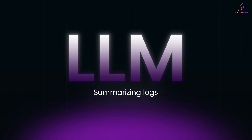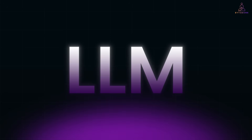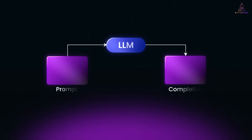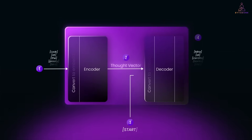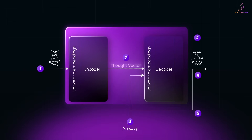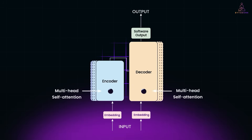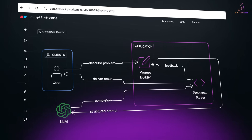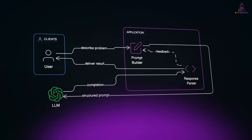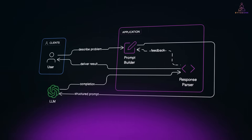Engineers who get good at this can move faster, build smarter, and use AI like a true extension of their toolkit. So in this video, we'll break down how large language models actually function, starting with their core objective: predicting the next word. We'll trace their evolution from early sequence-to-sequence models to transformers to today's powerful chat-based LLMs. And then we'll zoom into the heart of prompt engineering — how shaping input text can drive high quality output, and how that input-output loop fits into full LLM-powered applications like ChatGPT.